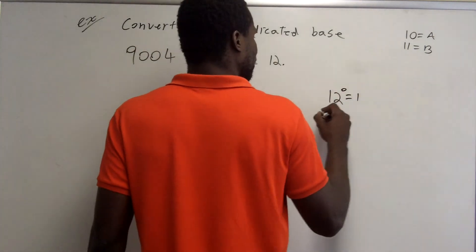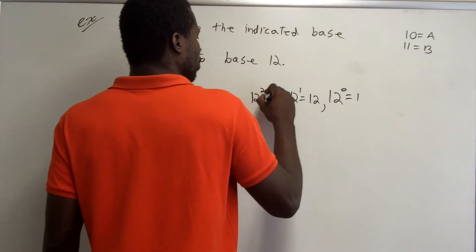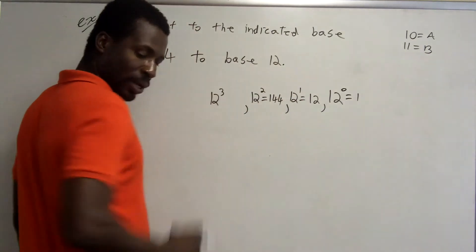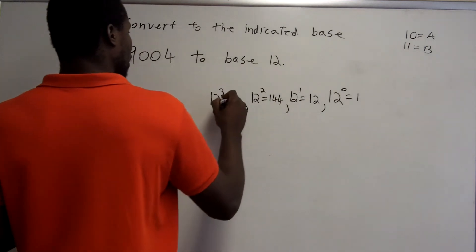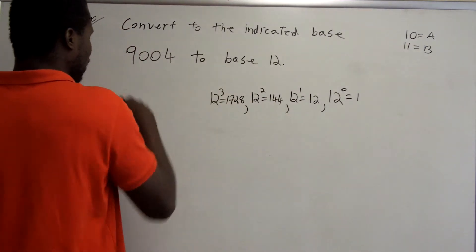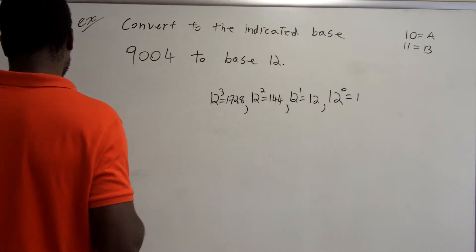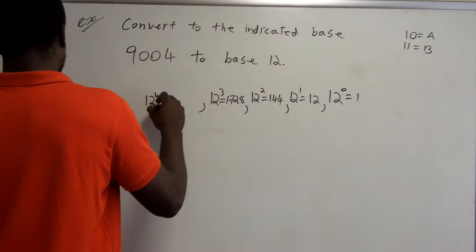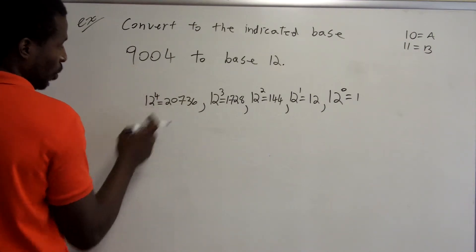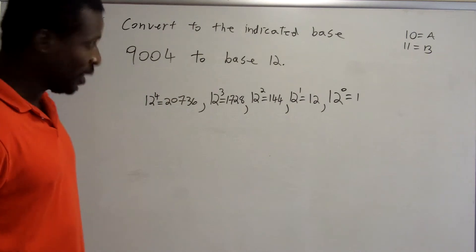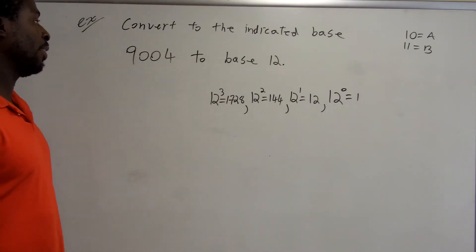So 12 to the 0 is 1. 12 to the 1st power is equal to 12. 12 to the 2nd power is 144. 12 to the 3rd power is 1,728, which is still smaller than 9,000. So then I try 12 to the 4th power, and that's 20,736. Well, that number is bigger than this one. So we only need 1, 2, 3, 4 digits to represent this number. We don't need this 5th place value because that value represents groups that are larger than 9,000.